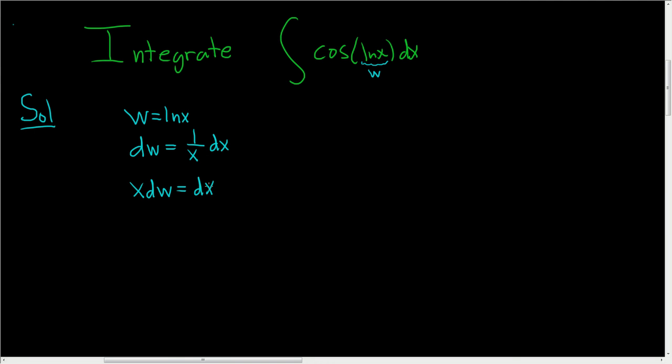And we're still in a problematic place because we have dx equals x dw, but here we don't have, we don't want x, we got to get rid of it. So if you know that w is equal to the natural log of x, if you exponentiate both sides, you end up with e to the w equals x. So we can replace x with e to the w. So this is e to the w dw equals dx.